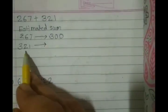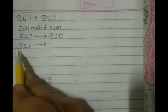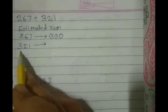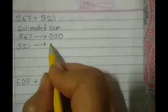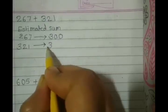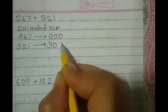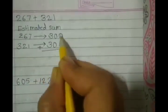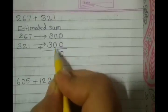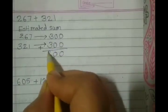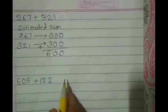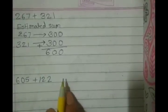In the next number, at the tens place, we are having 2. So hundreds place digit will not change. It will remain as it is like 3. And at the tens and ones place, we will write 0. Let's add them. 0 plus 0, 0, 0 plus 0, 0, 3 plus 3, 6. So our estimated sum is 600.